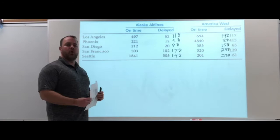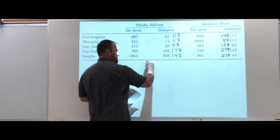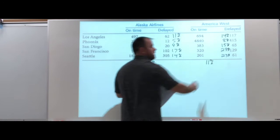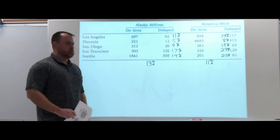Now, let's see what happens if we put them all together. If we look at the overall delay rate for each one of our airlines, Alaska has 13% compared to 11% America West.